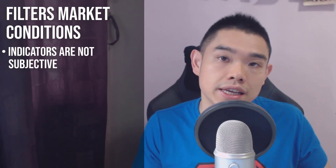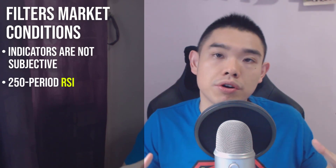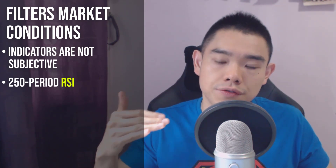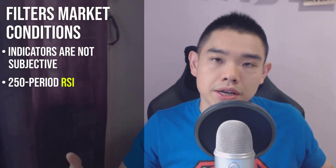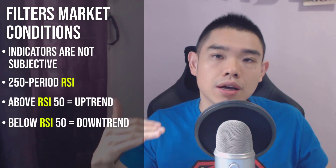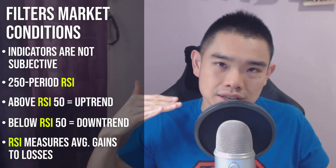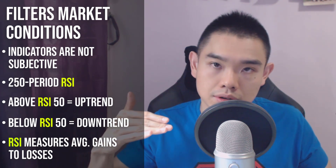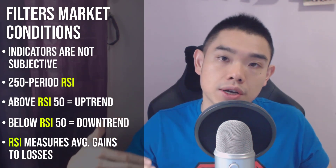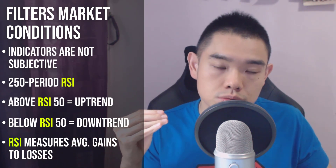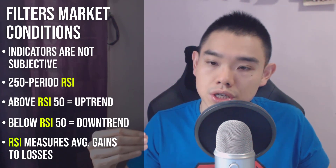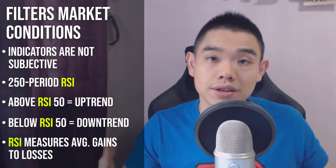One way to define the trend is to use a 250-period RSI — that's about 250 trading days in a year. Pay attention to the 50 mark: anything above 50 means the market is usually in a long-term uptrend, and below 50 means a likely long-term downtrend. The 50 level is the equilibrium because RSI measures average gains to average loss. If average gains exceed average loss, RSI goes above 50 and you get an uptrend. So the 250-period RSI above or below 50 filters for uptrend or downtrend.